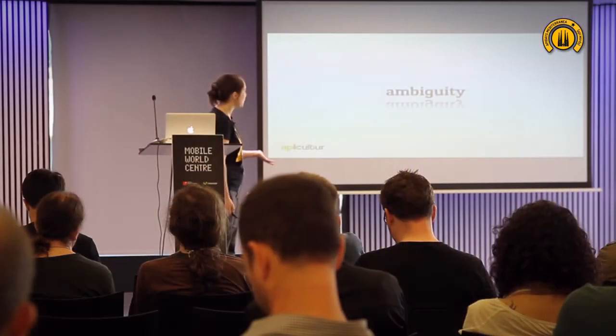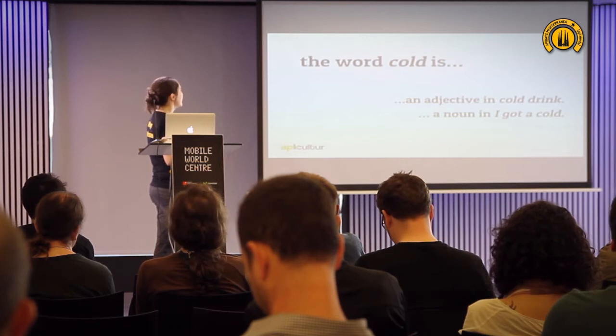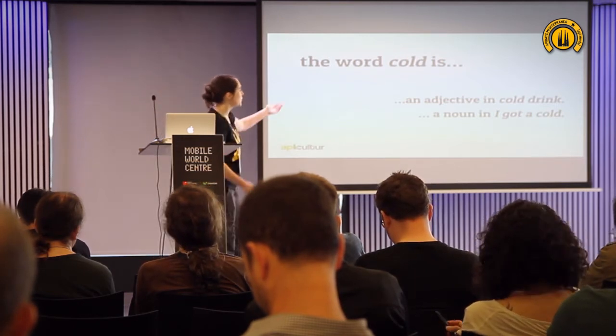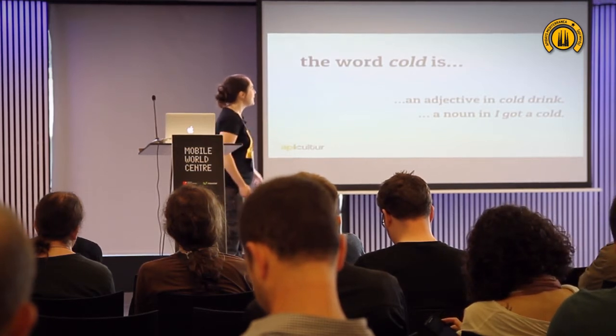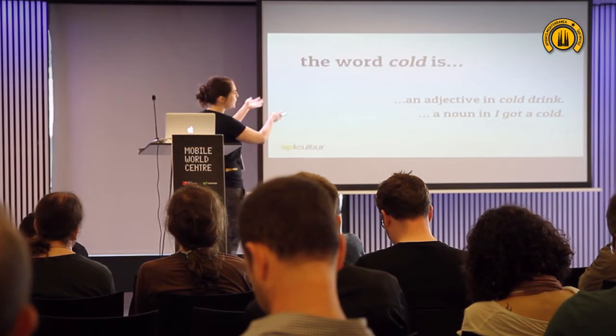Even when we have faced vocabulary, word building, syntax, and meaning, language will still be very ambiguous. I'll give you some examples of ambiguity in natural language processing because it can be tricky. We have a word like 'cold' in English, which could be an adjective in 'cold drink,' or a noun in 'I got a cold.' Syntax is what tells you that cold in one case is an adjective and in the other a noun.